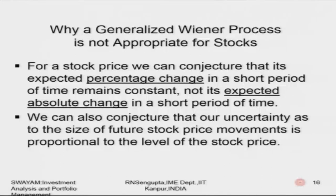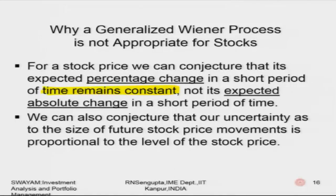Why is a generalized Wiener process not appropriate for stocks? For a stock price, it is expected that the percentage change in a short period of time remains constant, not the expected absolute change. We can also conjecture that the uncertainty about the size of future stock price movements is proportional to the current stock price S0, which should therefore have a deciding influence on future stock prices.